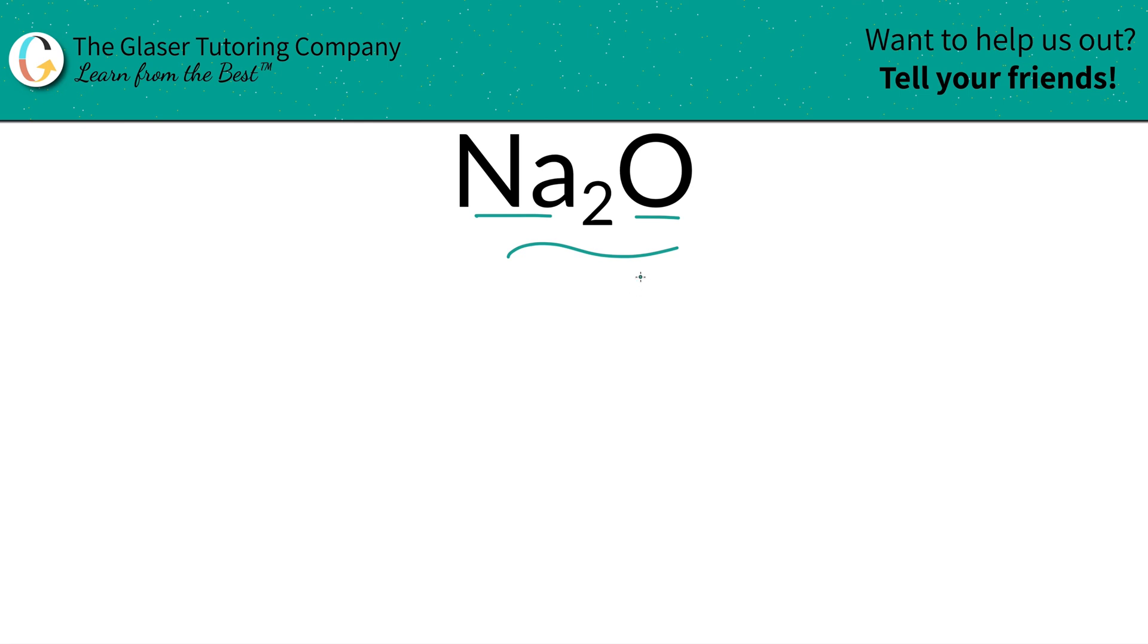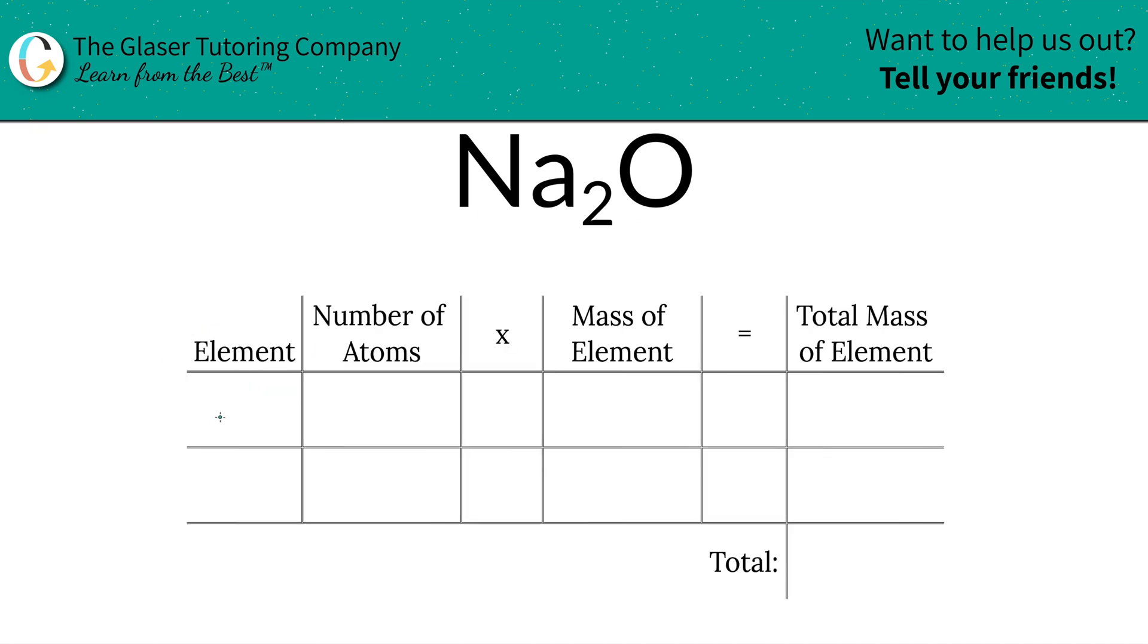So the first thing we do is write down the elements of the compound. We've got sodium and we got oxygen. Next is to identify the number of atoms and that's where the subscripts come into play. Now if there's no subscript at the bottom of the element just put in a one, so we got two sodium, one oxygen.